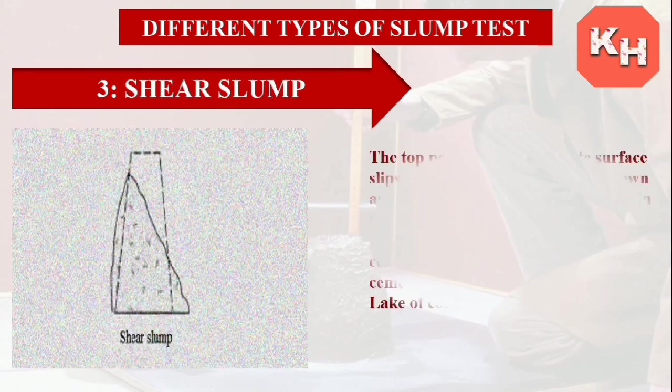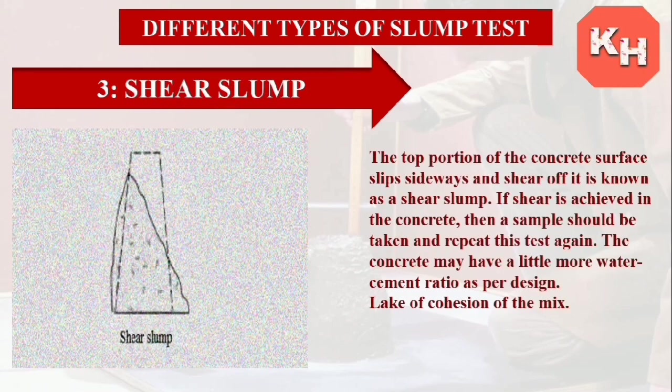Shear slump: The top portion of the concrete surface slips sideways, and this is known as a shear slump, as shown in the figure. If shear slump is achieved, a new sample should be taken and the test repeated. The concrete may have a slightly higher water-cement ratio as per mix design, or the water content may be more due to lack of cohesion of the mix.